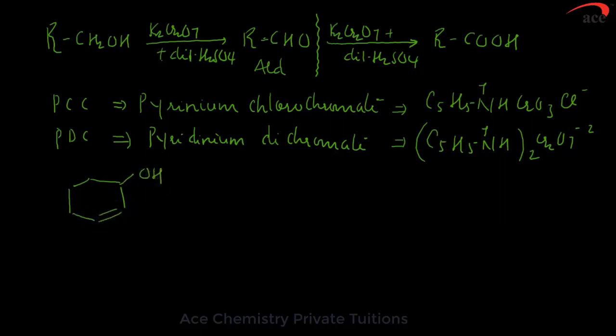For example, if you see this example, this is 1, 2 and 3, OH will get the least possible number, should be named as cyclohex-2-en-1-ol on treatment with PCC or PDC. It is found that double bond is unaffected, but C double bond O. COH, secondary alcohol gets oxidized to ketone.